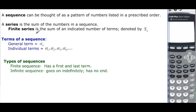A series is just the sum of all the terms in a sequence. A finite series is the sum of an indicated number of terms. So if I want to add up the first five terms, then I would say S of 5. The general term of a sequence is going to be a sub n.